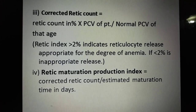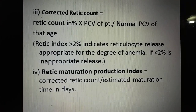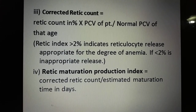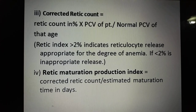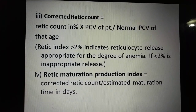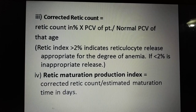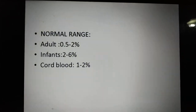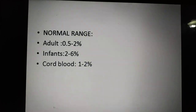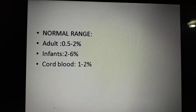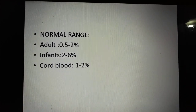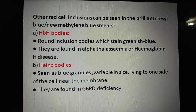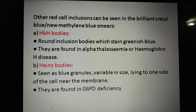The corrected retic count is also called the retic index. When it is more than 2%, it indicates reticulocyte release appropriate for the degree of anemia. If it is less than 2%, it means release is inappropriate. The retic maturation production index is calculated as corrected retic count divided by estimated maturation time in days. Normal ranges: adults 0.5–2%, infants 2–6%, and cord blood 1–2%.